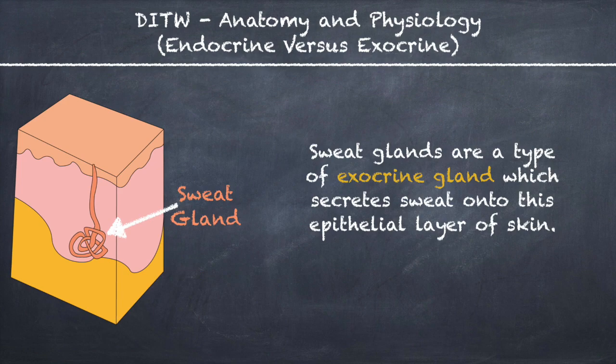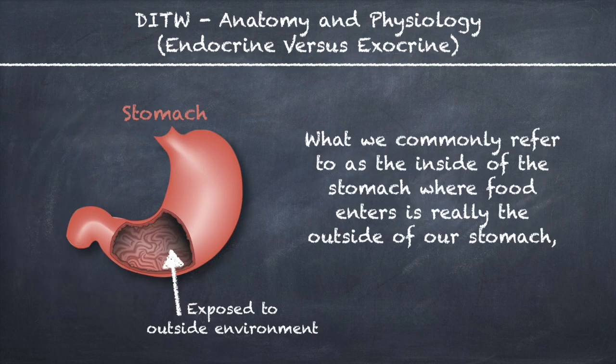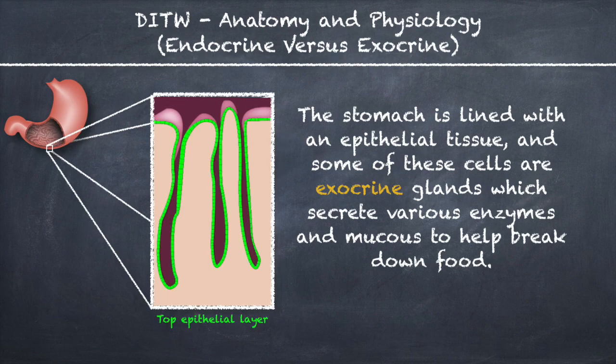Sweat glands are a type of exocrine gland which secretes sweat onto this epithelial layer of skin. What we commonly refer to as the inside of the stomach where food enters is really the outside of our stomach, since this is the part exposed to the outside environment. The stomach is lined with an epithelial tissue, and some of these cells are exocrine glands which secrete various enzymes and mucus to help break down food.